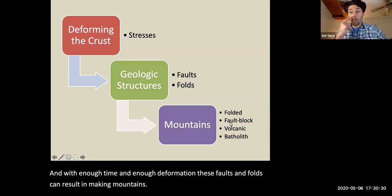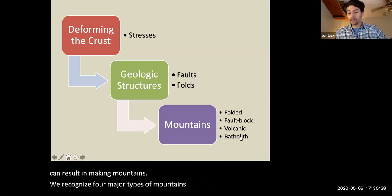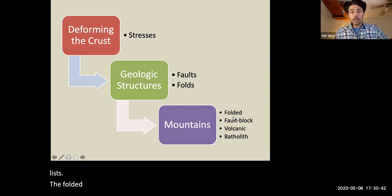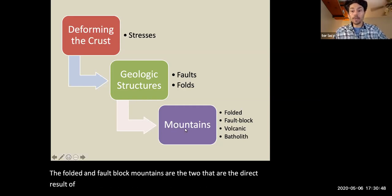And with enough time and enough deformation, these faults and folds can result in making mountains. We recognize four types of mountains, including folded mountains, fault block mountains, volcanic mountains, and batholiths. The folded and fault block mountains are the two that are the direct result of the crustal deformation that I'm going to describe today.